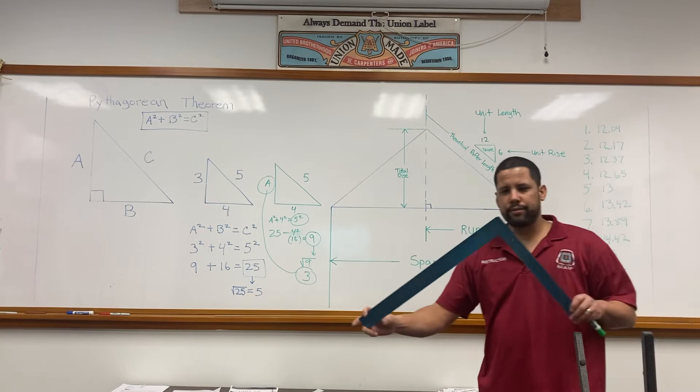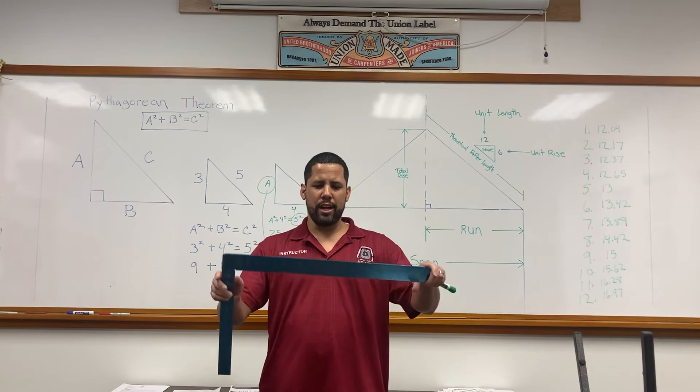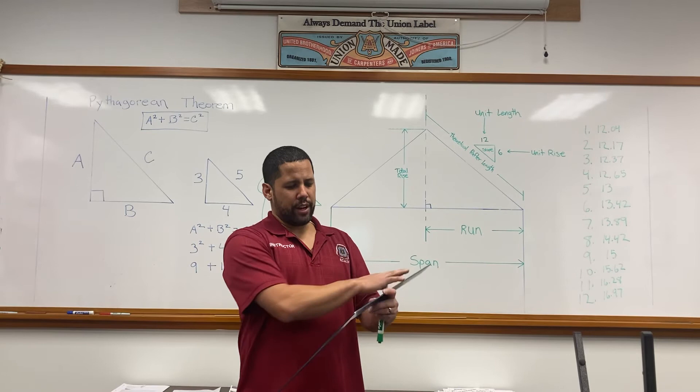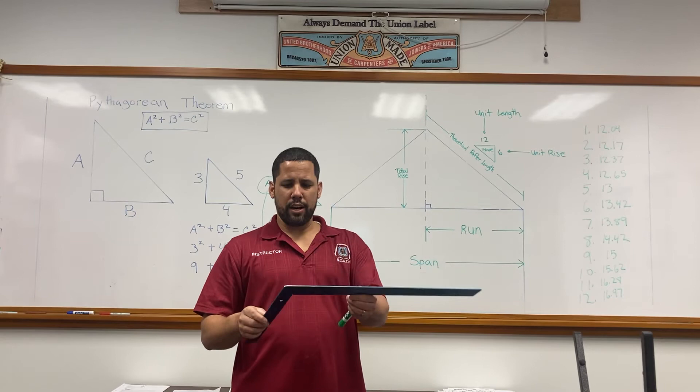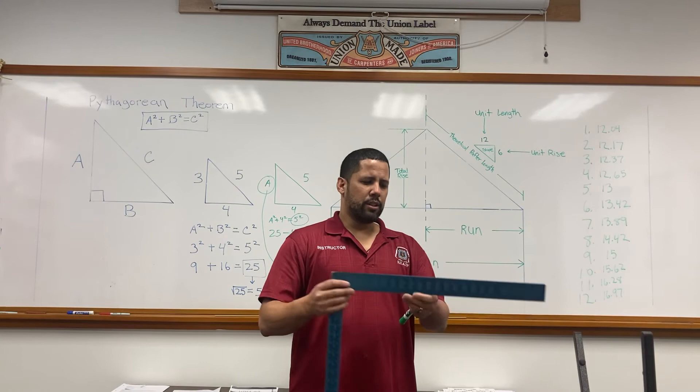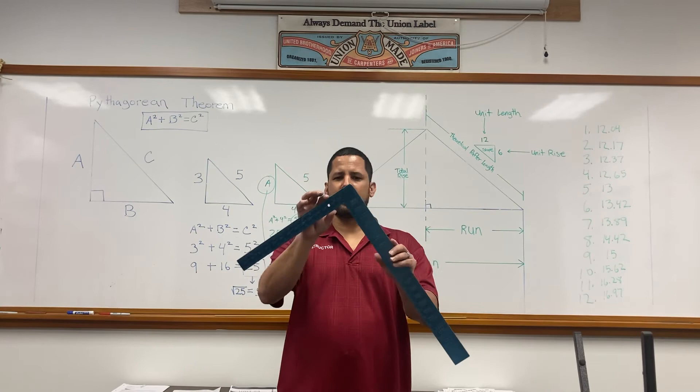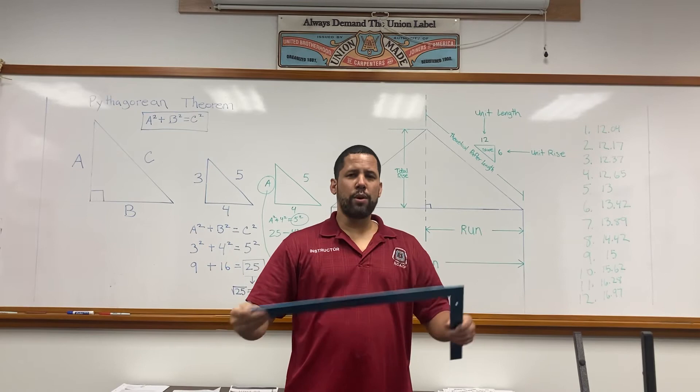One thing we need to go over now is the parts of the framing square. This is one of the main tools you're going to use in laying out and calculating a rafter. First, understand the parts. There are a lot of numbers on this tool—one of the most important tools you should have. This framing square has a body, which is the 2-inch side of the framing square. The tongue is the 1½-inch side. This corner here is called the heel.